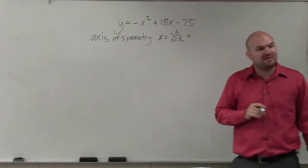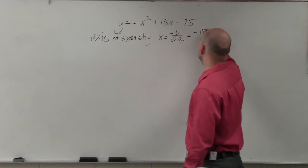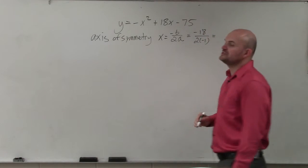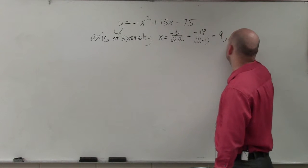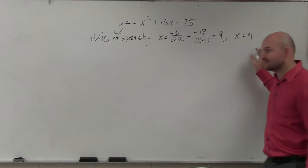So in this case, my b is going to be 18. So opposite of b is going to be negative 18 divided by 2 times negative 1. 2 times negative 1 is negative 2. 18 divided by negative 2 is 9. Just remember, x equals 9. That is going to be my axis of symmetry.